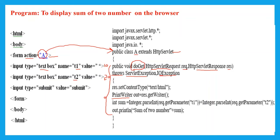We call setContentType, which is a method that specifies what type of content should be displayed on the browser — either text, HTML, or both. The setContentType method belongs to the response interface, so we call it through an instance of the HttpServletResponse interface.